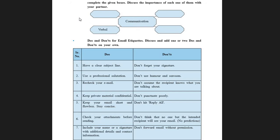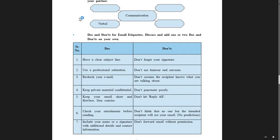First, we will read the do's column followed by the don'ts. As you start to write an email, follow these instructions strictly. Number one: have a clear subject line. Number two: use professional salutation. Number three: recheck your email. Number four: keep private material confidential. Number five: keep your email short and flawless — stay concise. Number six: check your attachments before sending. Number seven: include your name or a signature with additional details and contact information.